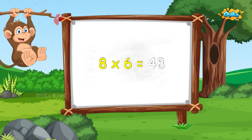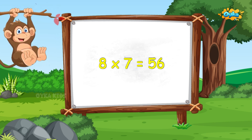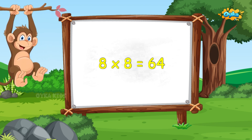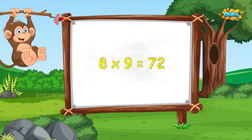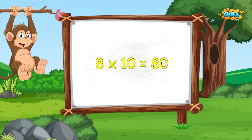8 6s are 48, 8 6s are 48, 8 7s are 56, 8 7s are 56, 8 8s are 64, 8 8s are 64, 8 9s are 72, 8 9s are 72, 8 10s are 80.